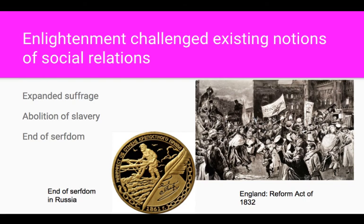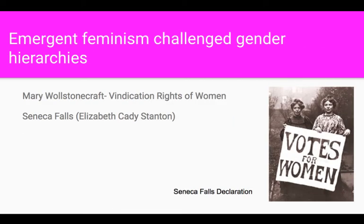Regarding the Enlightenment and society: expanded suffrage means the right to vote is granted to more people. Slavery is abolished, which is a change in social hierarchy, as is the abolition of serfdom. These are all ideas based on Enlightenment principles of individual liberty. The Reform Act of 1832 in England extended the right to vote to more people. As feminism emerges, it challenges gender hierarchies. Mary Wollstonecraft and Elizabeth Cady Stanton are early 19th-century figures to remember in the feminist movement.